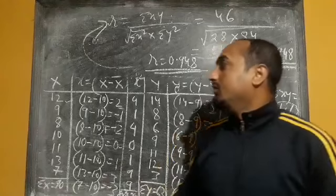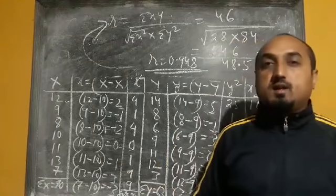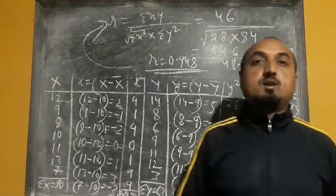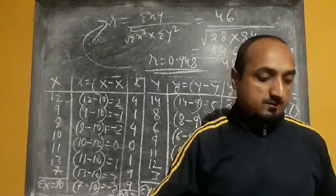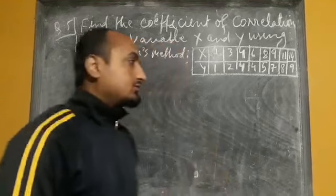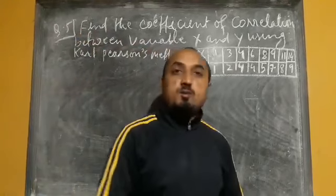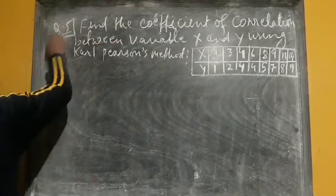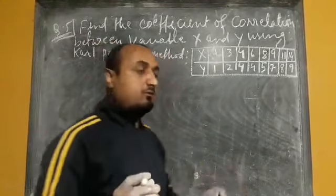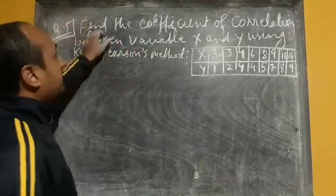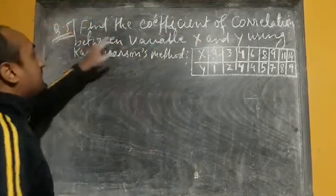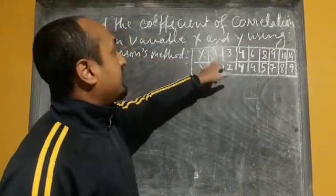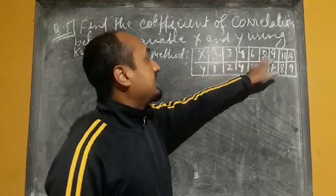I will do one more question to make your concept clearer. Question number 5 from Karl Pearson's correlation coefficient: find the coefficient of correlation between variable x and y using Pearson's method. The x values are 1, 3, 4, 6, 8, 9, 11, 14 and the y values are 1, 2, 4, 4, 5, 7, 8, 9.